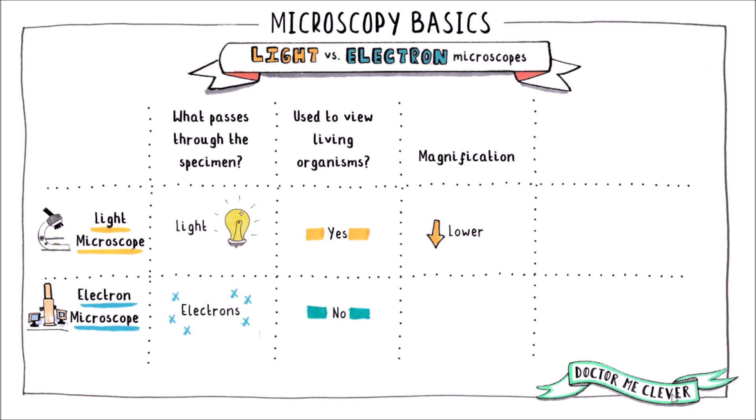The magnification power of a light microscope is lower than that of an electron microscope and the resolution of a light microscope is lower than that of an electron microscope. Light microscopes can distinguish between large organelles however an electron microscope can distinguish between points within organelles and can also resolve much smaller structures such as ribosomes and plasmid DNA.